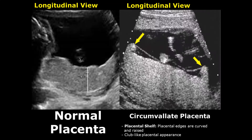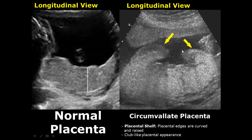A circumvallate placenta will have raised, rolled edges; this raised rolled edge is known as a placental shelf, giving it a club-like appearance. Normally the amniochorionic membranes attach to the edge of the placenta, but in this situation they attach on the interior surface of the placenta. Here is another case of circumvallate placenta where we can see the raised and curved edges.